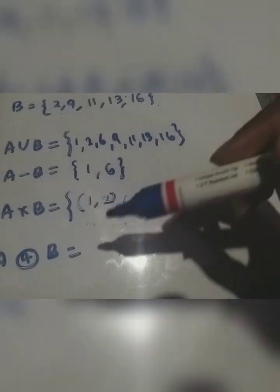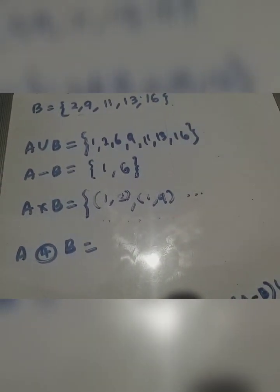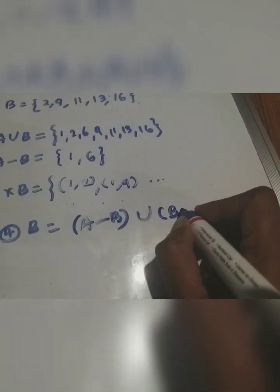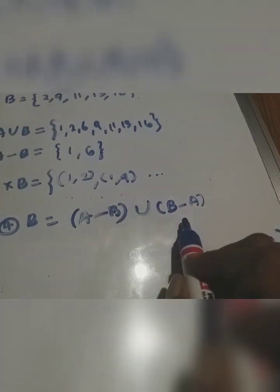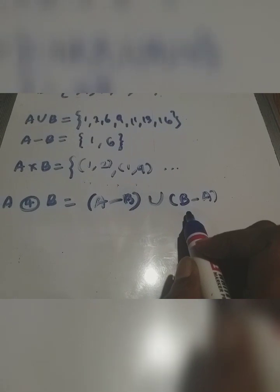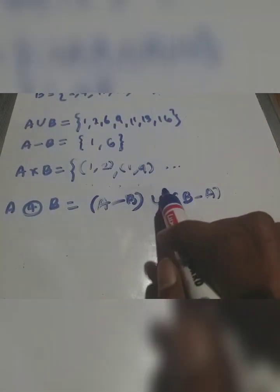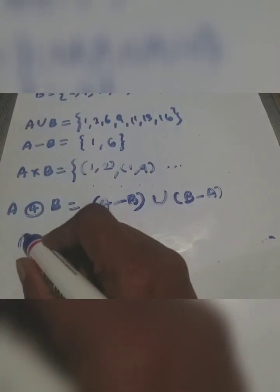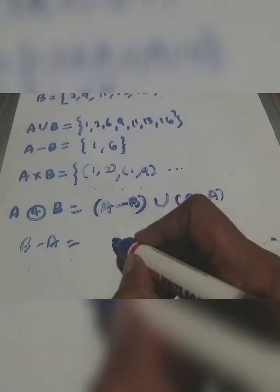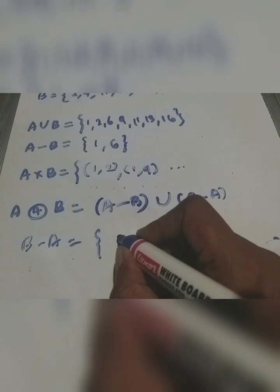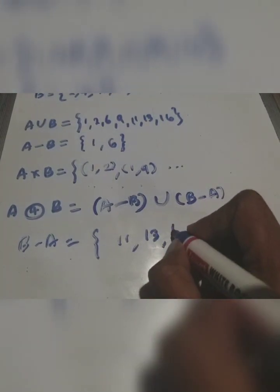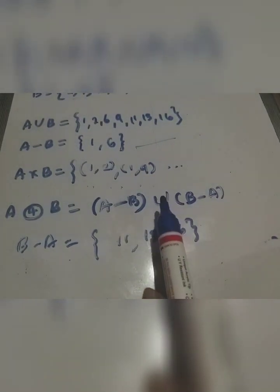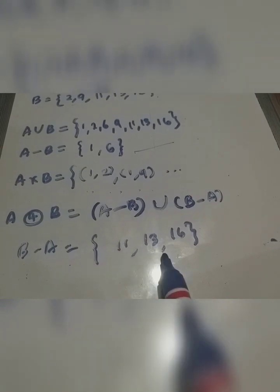B minus A: B-A = {3, 11, 13, 16}. The union of A-B and B-A gives {1, 3, 6, 11, 13, 16}.